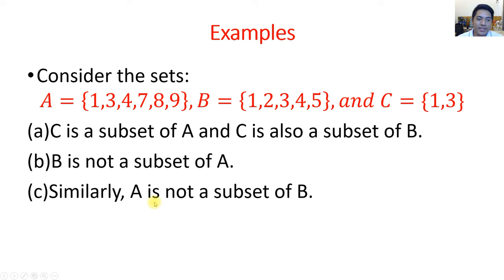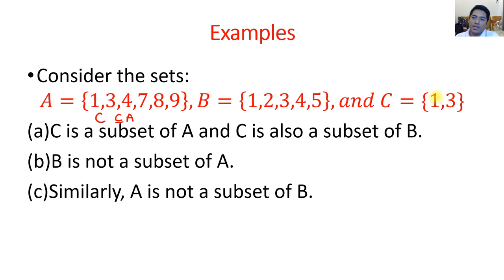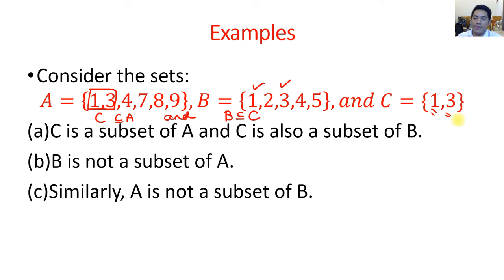Now, examples. Consider set A = {1, 3, 4, 7, 8, 9}, set B = {1, 2, 3, 4, 5}, and set C = {1, 3}. For letter A: C is a subset of A, which is true because set C has 1 and 3, and both 1 and 3 are present in set A. Also, since B has 1 and 3, we can say C is a subset of B as well.